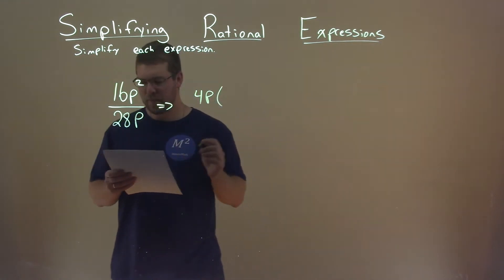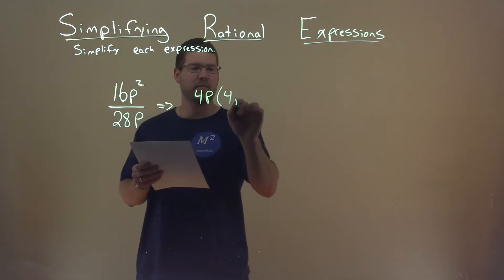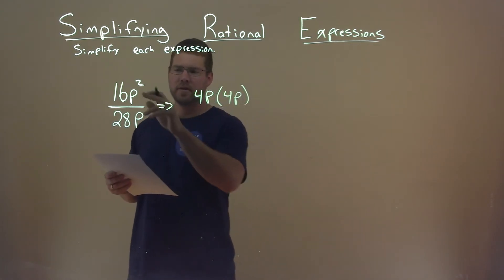So, if I pull out a 4p from the numerator, I'm left with 4p, right? 4p times 4p is 16p squared.